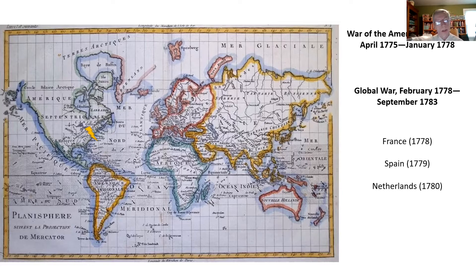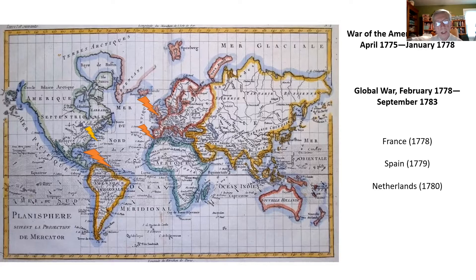Britain has challenges all over the place. There's fighting in the Caribbean, the sugar islands, which are really lucrative. The Spanish and the French besiege Gibraltar, this British naval base that controls access to the Mediterranean. And there's even a possibility that the Spanish or the French might invade Britain or Ireland. So once this becomes a global war, British strategy has to shift. They actually have to pull soldiers and ships out of North America and send them elsewhere.